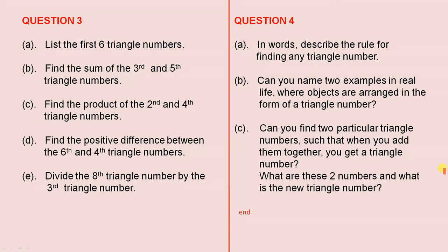Question 3. List the first six triangle numbers. Find the sum of the third and fifth triangle numbers. Find the product of the second and fourth triangle numbers. Find the positive difference between the sixth and fourth triangle numbers. Divide the eighth triangle number by the third triangle number.